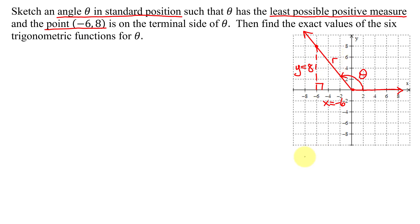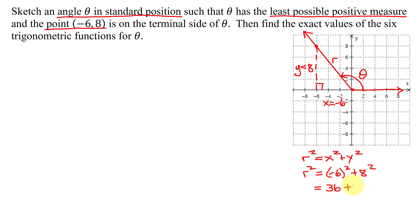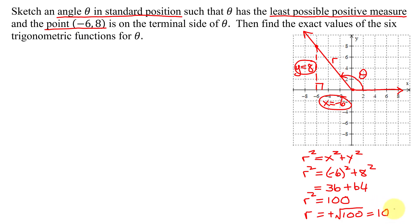We can find r using the Pythagorean theorem: r squared equals x squared plus y squared. So r squared equals negative 6 all squared, plus 8 squared. Negative 6 all squared is positive 36, plus 8 squared is 64. So r squared equals 36 plus 64, equals 100. R is always positive, so it's the positive square root of 100, which is positive 10. Now I know x, y, and r.